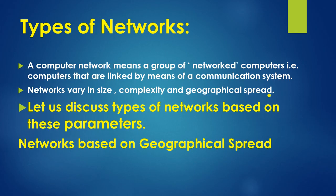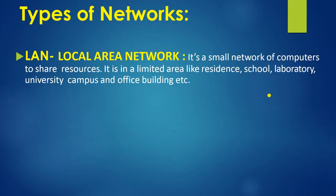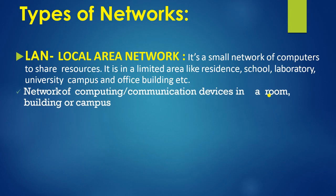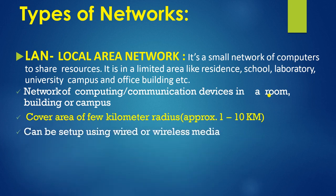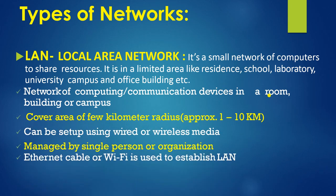Based on geographical spread, networks are of two types: LAN and WAN. LAN, local area network, is a small type of network used in residences, schools, laboratories, university campuses, and office buildings. It can work in a room, a building, or a campus, covering an approximate area of 1 to 10 kilometers. It uses wired or wireless media.